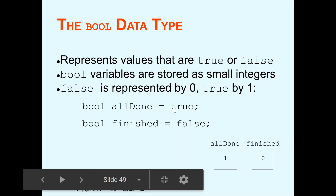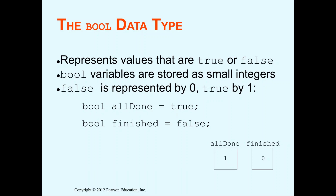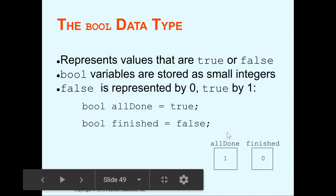You say all done. You say full time. And then you have to say whether it's true or false. You can write out true all in lowercase, you can write out false all in lowercase, or C++ lets you use a one or zero to represent the true or false.